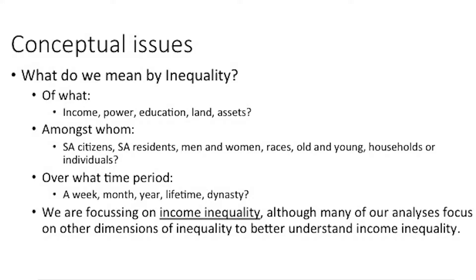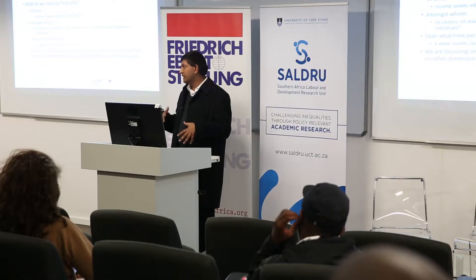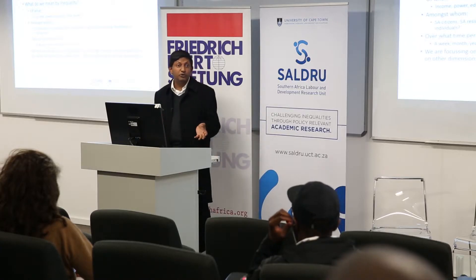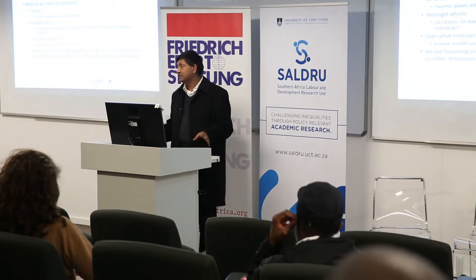One thing we don't talk about much but which gets serious when talking about measurement is: inequality amongst who? We're always talking about inequality within a group. Does the group include refugees? Does it include illegal immigrants? That question needs to be made clear. Most of the time when using our surveys, you'd have to go back into the sampling frameworks — they would not exclude people based on citizenship or the legality of their presence. So conceptually, we would be talking about all people who are resident in South Africa.